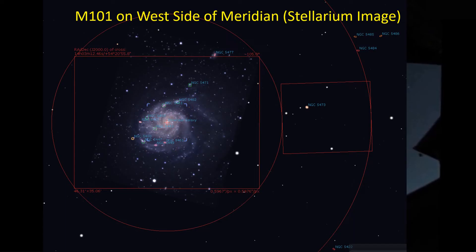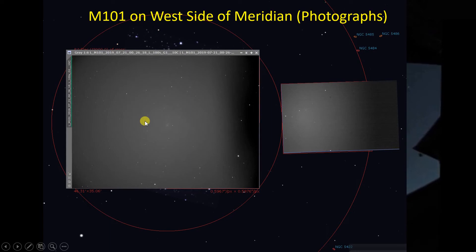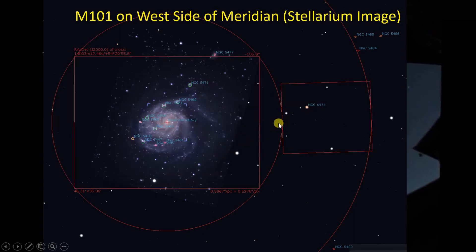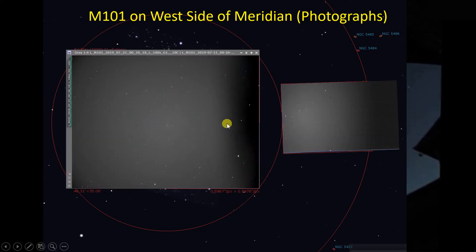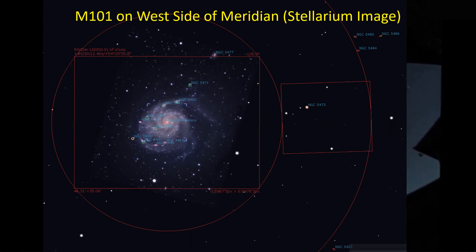Let's head back and take a look at the setup of the imaging camera and the guide camera. Sometime back, I put the Celestron off-axis guider on the SCT. The SCT at that time had the focal reducer, and this was a picture I took of M101 on the west side of the meridian. You can see the galaxy here — there's NGC 5477 up here — and this is the image of the guide stars. When I looked at the actual pictures I took with the imaging camera here and the guide camera here, you can see that there is a one-to-one correspondence looking at this star, this star, and this star.